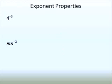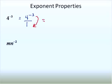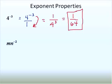Next, we have 4 to the negative third power. When you have a negative exponent and it's not in fraction form, we change it to fraction form. The number or variable with the negative exponent moves to the denominator to make it positive. So we get 1 over 4 to the third, which we write as 1 over 64, since 4 to the third is 64. The final answer is 1 sixty-fourth.